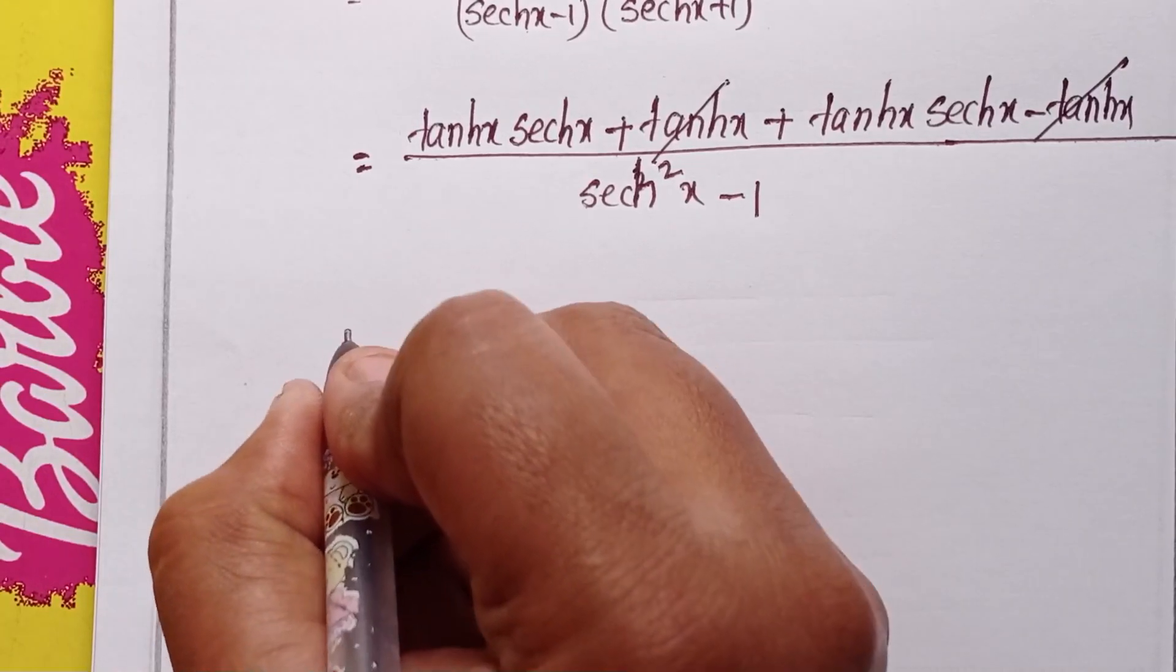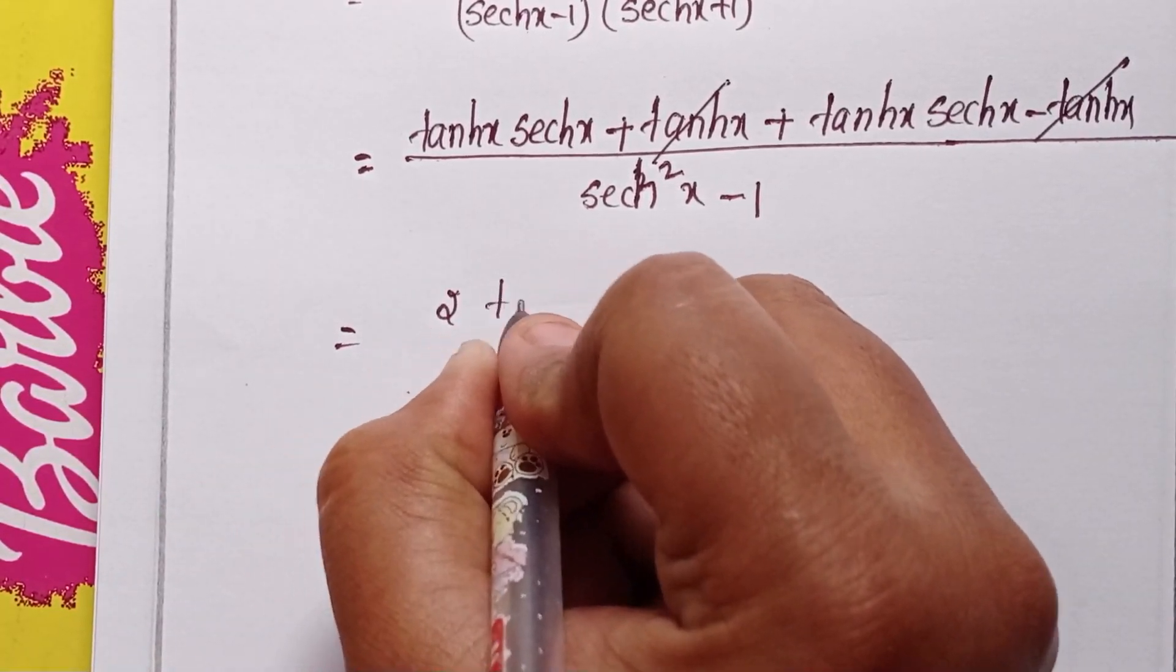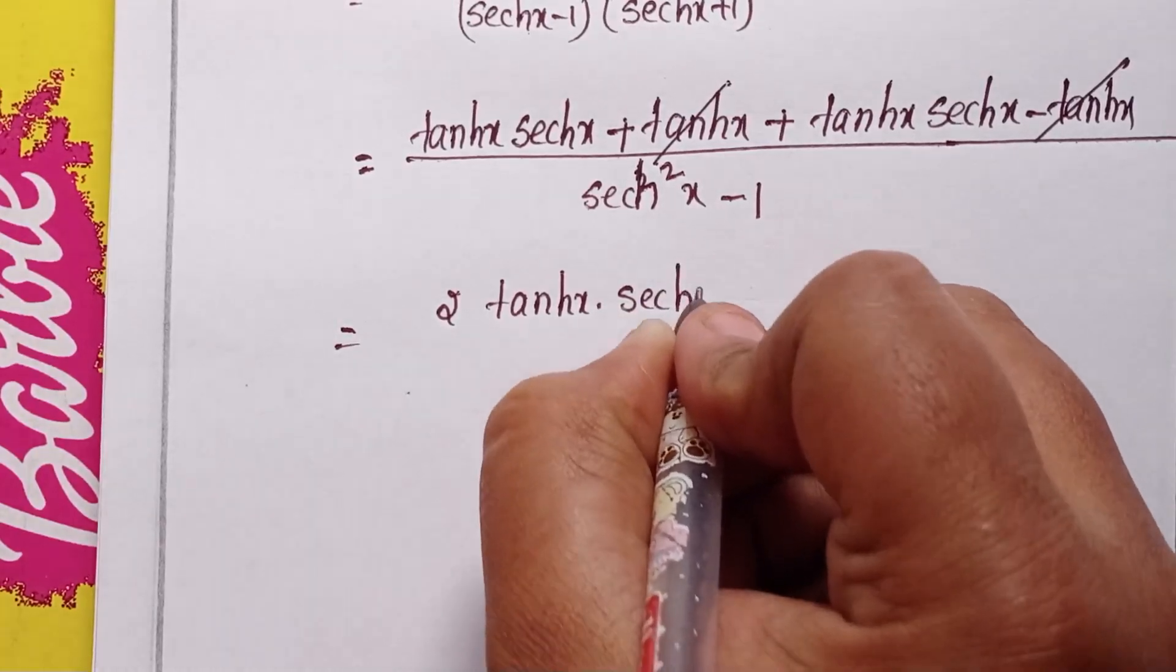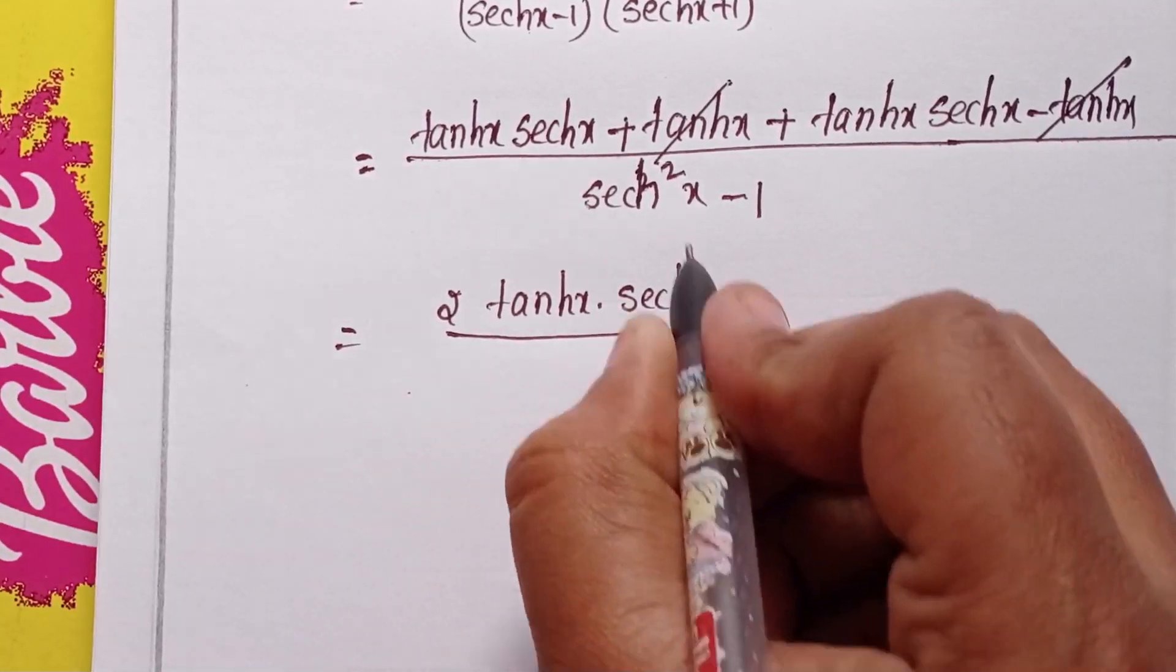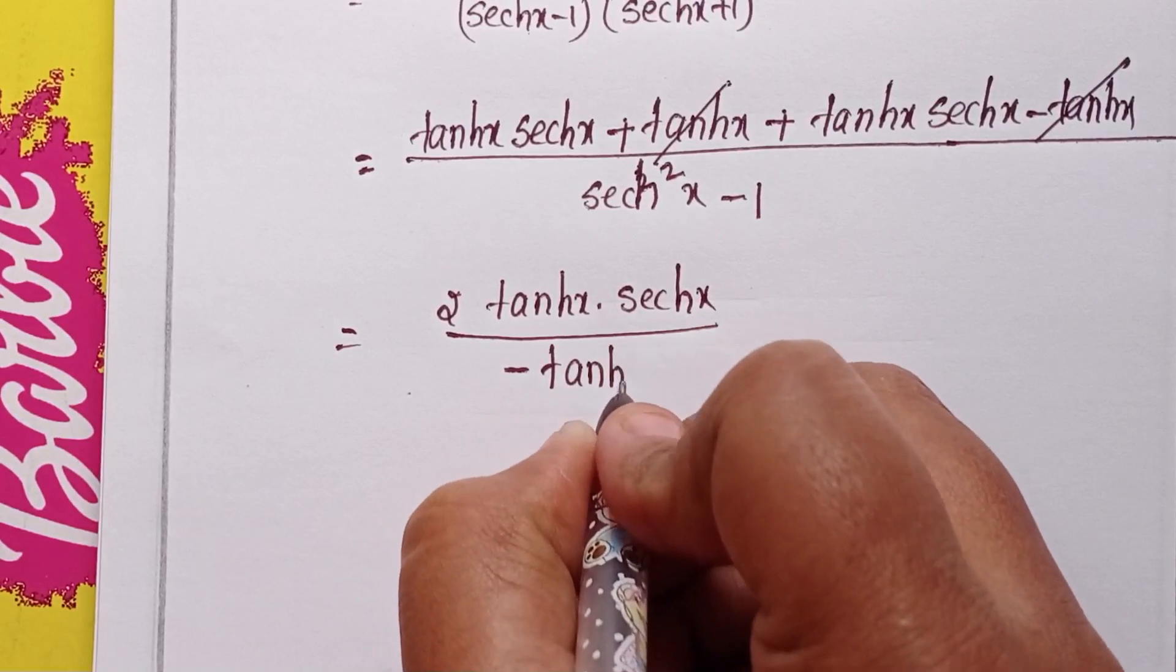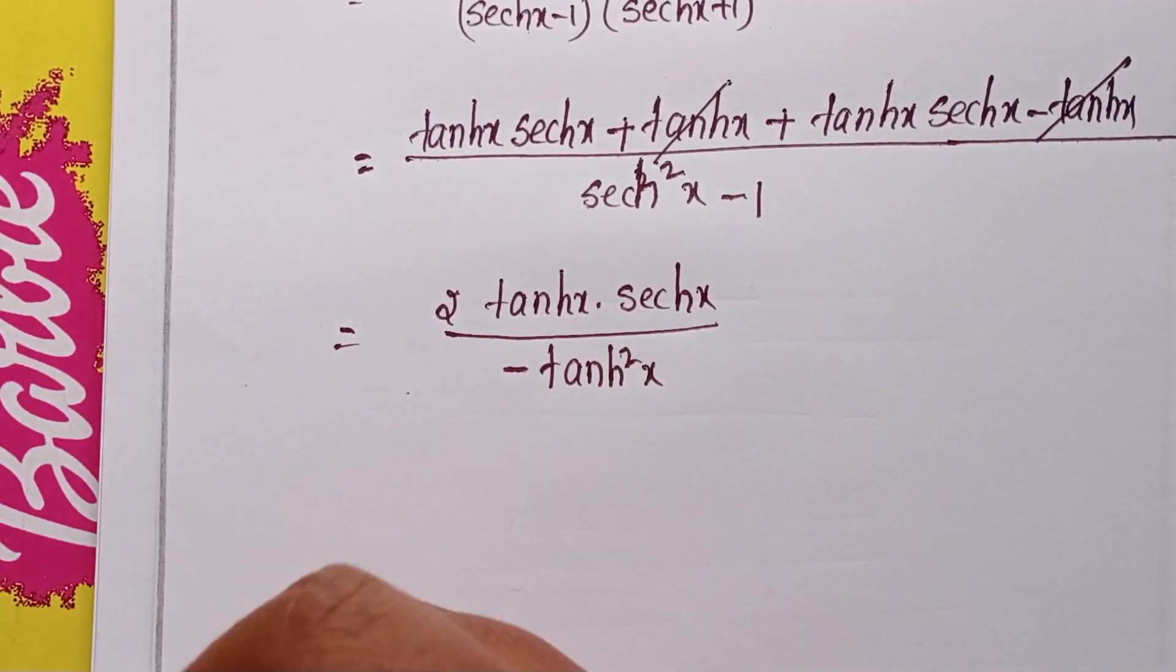This becomes minus tanh squared x. Using the identity 1 minus tanh squared x equals sech squared x, so tanh x cancels.